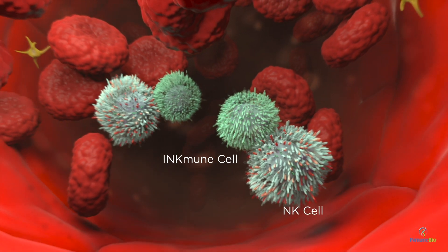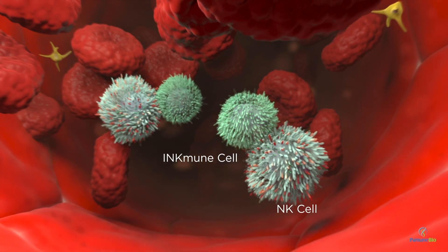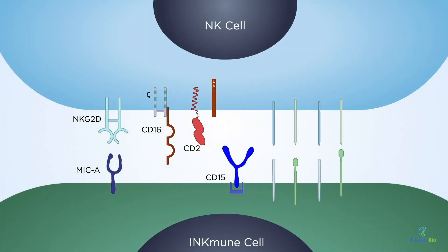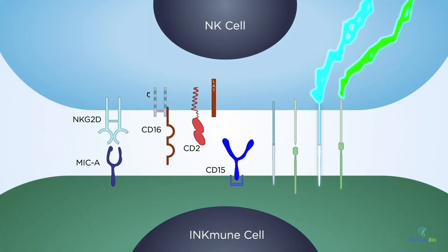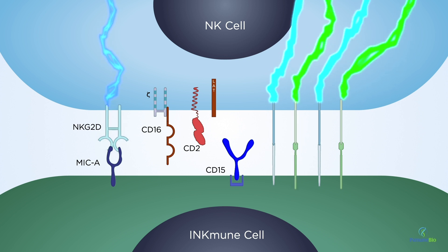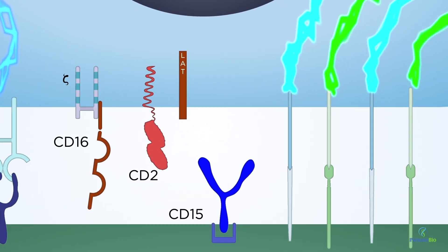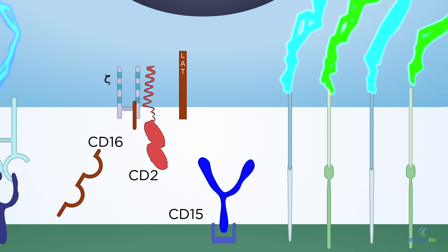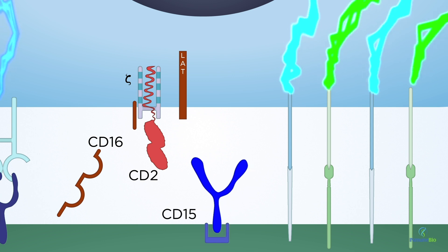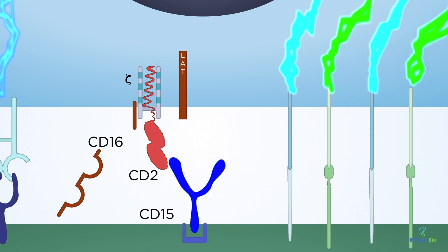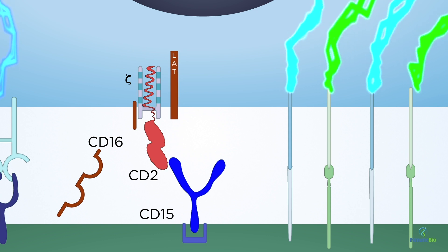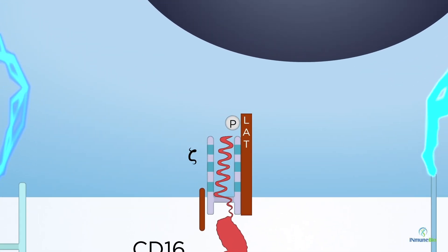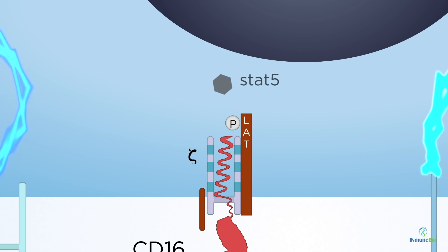Inkmune cells bind to NK cells via multiple ligand receptors, one of which is CD15. In the NK-Inkmune synapse, the CD2 receptor on the NK cell binds to CD15 on the Inkmune cell and CD16 is shed. Within the cytoplasm of the NK cell, CD3 zeta released from CD16 then binds to the intracellular domain of CD2 and is phosphorylated. This leads to the downstream phosphorylation of LAT and the subsequent phosphorylation of STAT5.